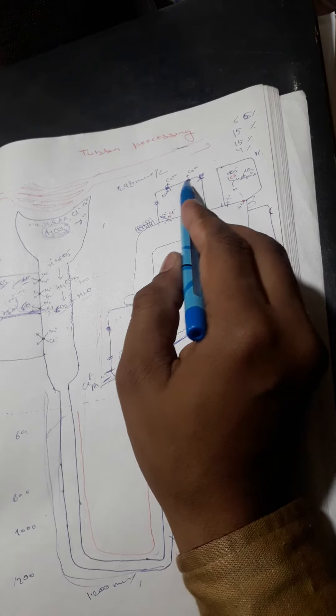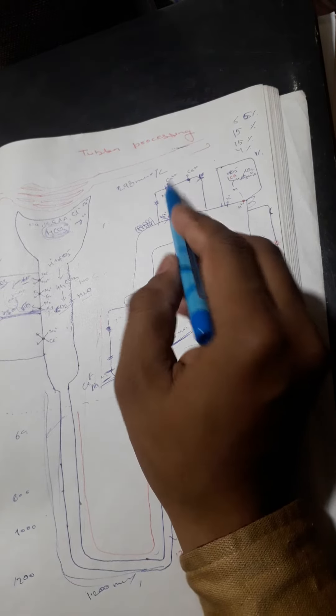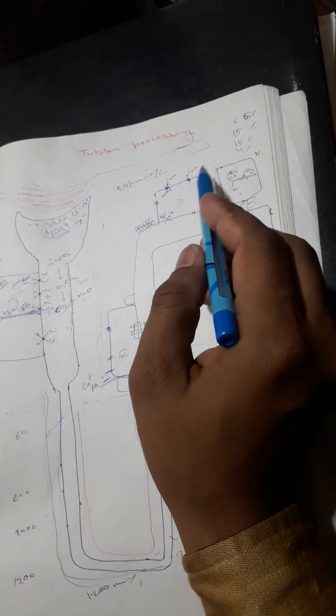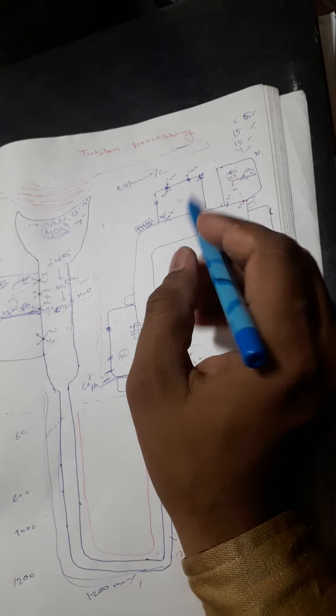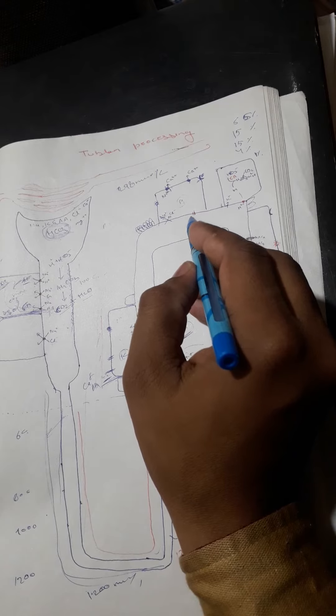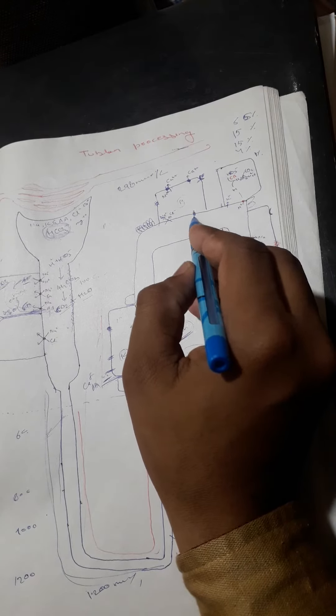The activity of this channel will increase, so more and more calcium goes outside by these two channels. When more calcium goes outside by this channel, then calcium absorption occurs by this channel by the process of diffusion.